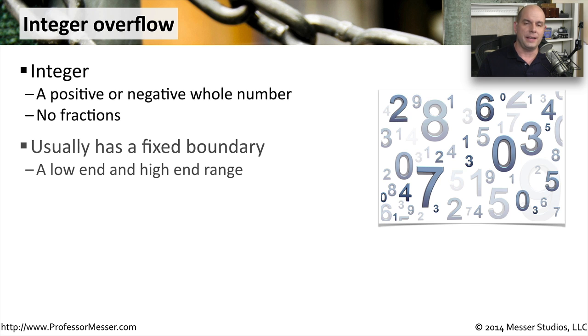Usually there is a fixed boundary when we're developing applications for these integers. You assign a variable to cover the range between, say, negative 32 and 32. So every possible number between those would be an integer that we could store for that particular variable.